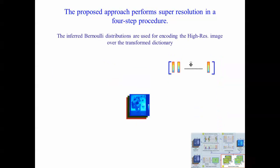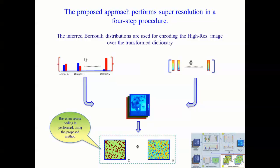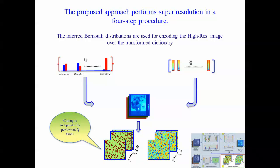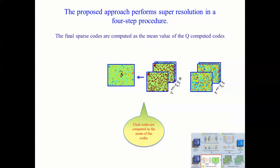In the third step, we use the transformed dictionary and the set of computed Bernoulli distributions to sparse code the high-resolution image. The proposed Bayesian sparse coding strategy performs the inferencing process Q times. The final sparse code matrix is computed by taking the mean of the inferred codes. A theoretical analysis is provided in the paper supporting the rationale behind this approach.